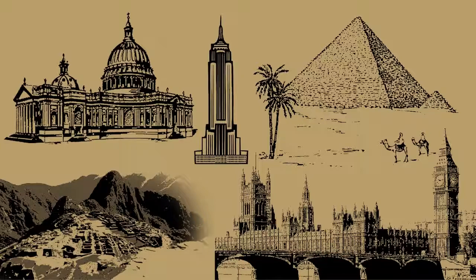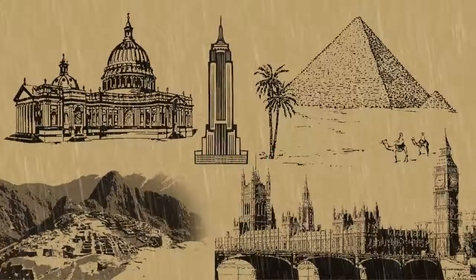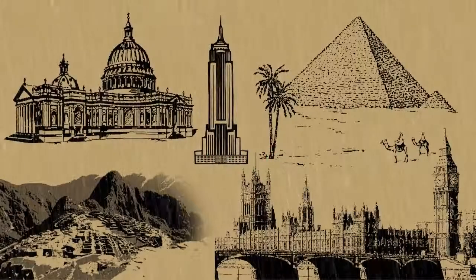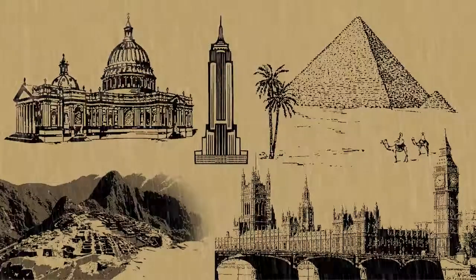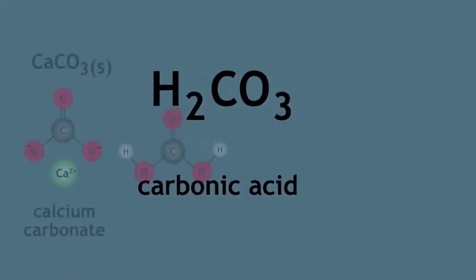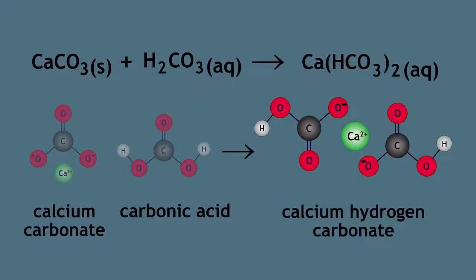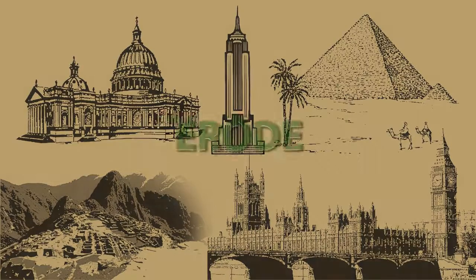There is, however, a fairly recent major environmental issue. Acid rain is slowly eroding these and many other limestone structures. One of the acidic components of acid rain is carbonic acid. Calcium carbonate reacts with carbonic acid to give calcium hydrogen carbonate, which is soluble in water. As a result, these limestone structures erode.